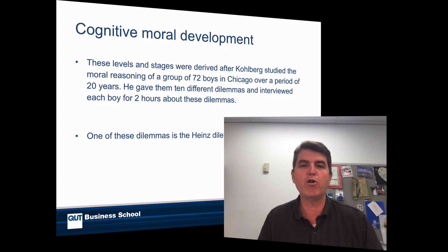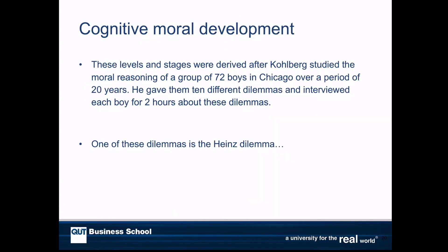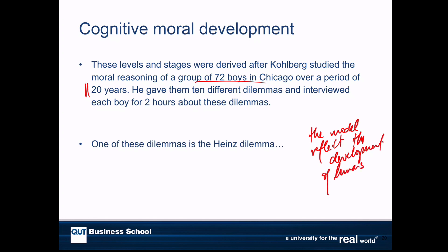So how did Kohlberg come up with this theory? He studied a group of 72 boys in Chicago for 20 years. One of the first things you'll notice is that the model really reflects the development of most humans, and particularly the reasoning of most humans as they get older. This is the idea of moral development being behind the model.